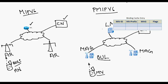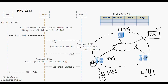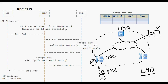When a mobile node enters the Proxy Mobile IPv6 domain, it attaches itself to the access link provided by the mobile access gateway. The mobile access gateway then identifies the mobile node and checks if it is authorized to use the Proxy Mobile IPv6 service. If authorized, it acquires the mobile node ID — the unique ID to identify the mobile node, which could be the MAC address — and this is acquired through a router solicitation message.